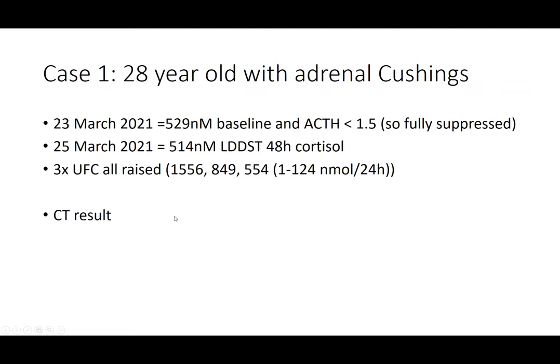To illustrate this, here's a case presented with a vote. This patient presented in March 2021 with a cortisol of 529 and a fully suppressed ACTH. She had a low-dose dexamethasone test: the 48-hour cortisol was 500, and urinary cortisols were all elevated. This is an obviously Cushingoid patient — definitely Cushing's. Because the ACTH is suppressed, we think it's adrenal, so we do a CT scan.